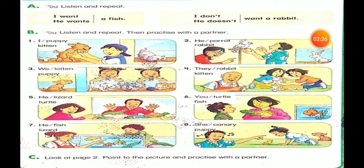Now, in our book: I want a fish. He wants a fish. I don't want a rabbit. He doesn't want a rabbit. So, with 'I,' we use 'want' or 'don't want.' But with he, she, or it, we use 'wants' or 'doesn't want.'